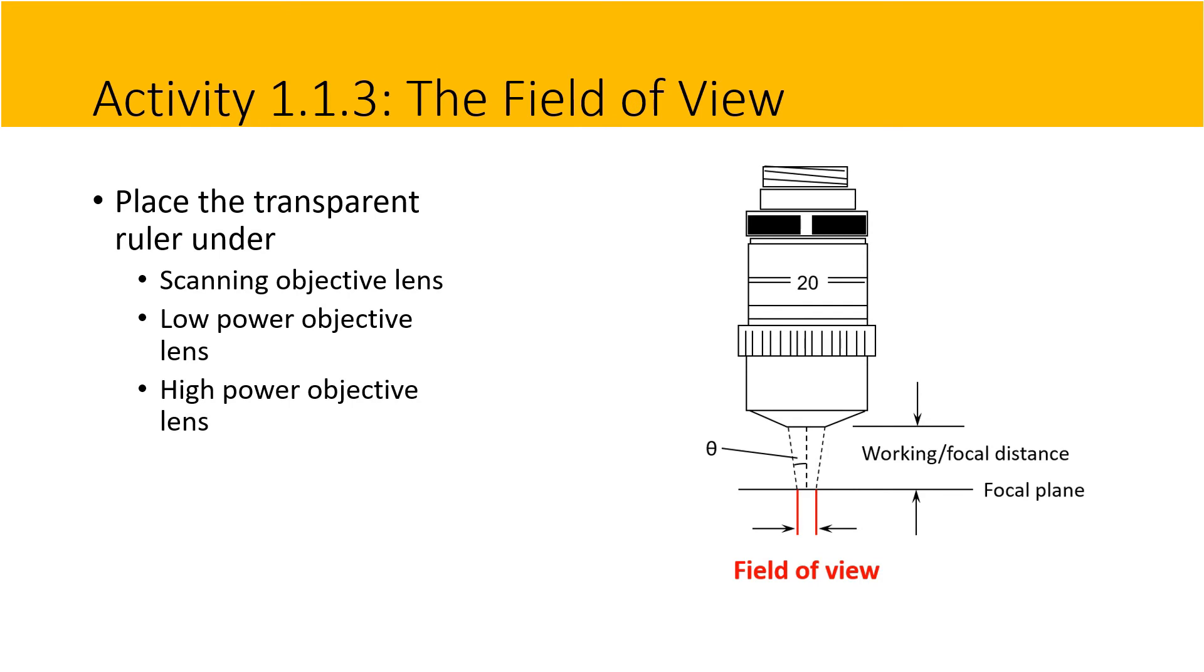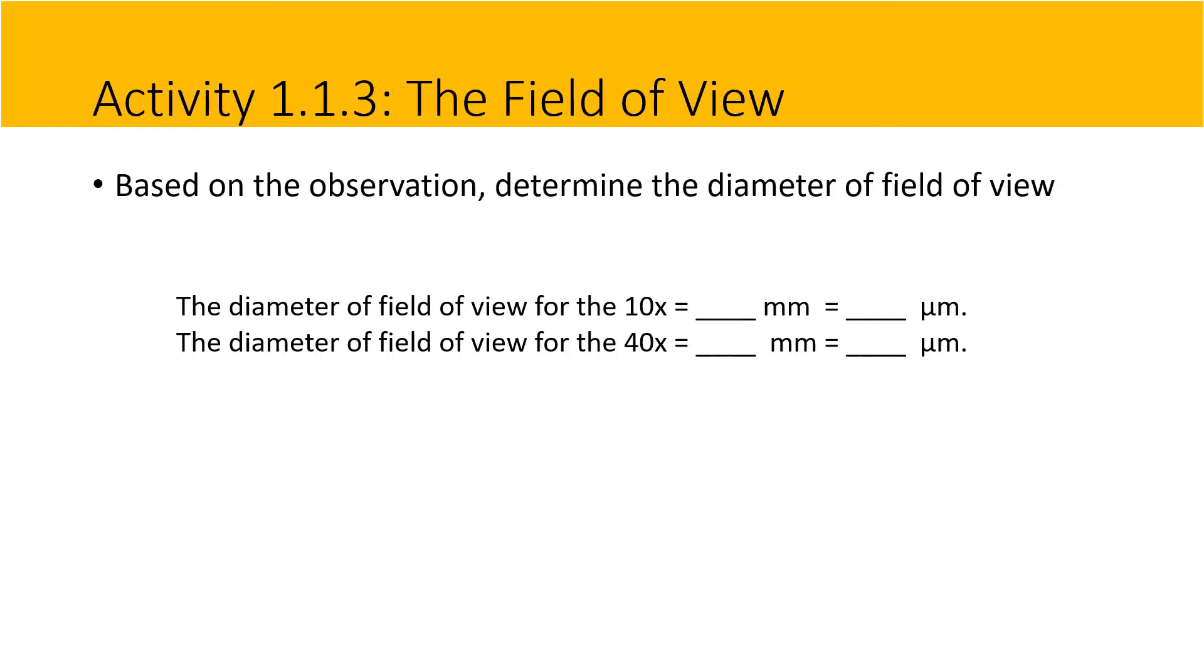Activity 1.1.3: the field of view. Place a transparent ruler under the scanning objective lens, low power objective lens, and under the high power objective lens. Based on the view in the microscope, determine the field of view for each magnification power. Based on the observation, determine the diameter of the field of view.